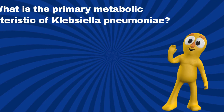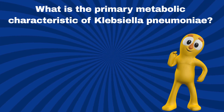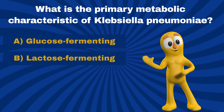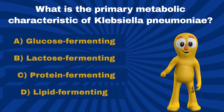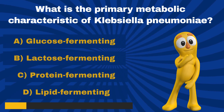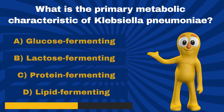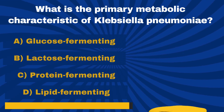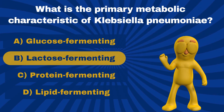Question 1. What is the primary metabolic characteristic of Klebsiella pneumoniae? A. Glucose fermenting. B. Lactose fermenting. C. Protein fermenting. D. Lipid fermenting. Correct. It is B — Lactose fermenting.